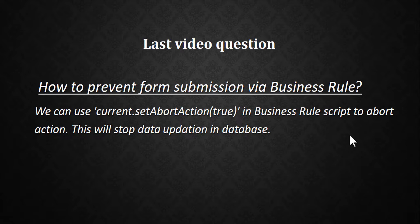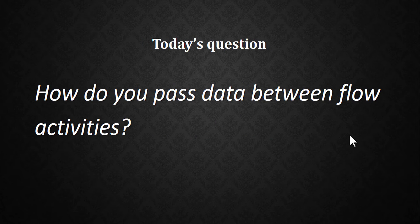In the last video the question was how to prevent form submission via business rule — you use current.setAbortAction(true) in the business rule script to abort the action. Today's challenge question is: how do you pass data between flow activities? If you know the answer, write it in the comments and I'll give the answer in the next video. Thank you, God bless you all.